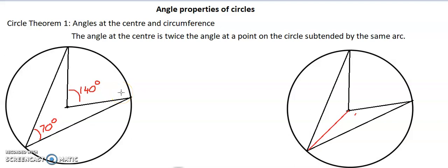Angle properties of a circle. We are going to look at the first theorem of a circle, which is looking at angles at the center and the circumference.